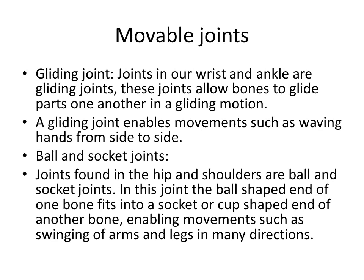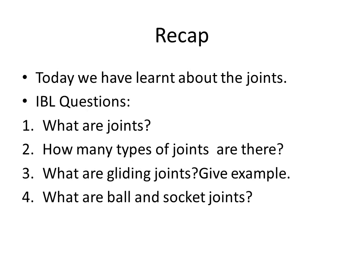Ball and socket joints are present mainly in the hip and shoulders. If you see the diagram, you can see a ball attached to the socket. These joints enable movements such as the swinging of arms and legs in many directions.